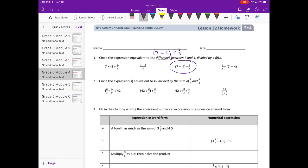Number two, circle the expression equivalent to 42 divided by the sum of 2 3rds and 3 4ths. So we have 42 divided by the sum. That means plus. So we're adding 2 3rds and 3 4ths. So we're looking for that. Let's see if we see that one. That one's right here.